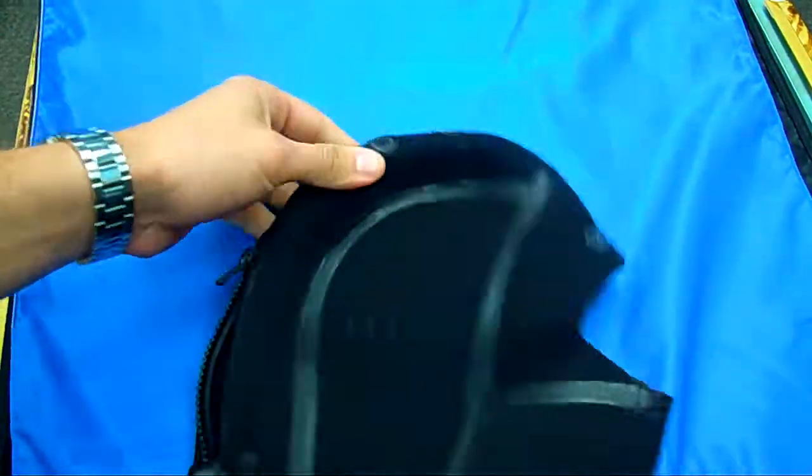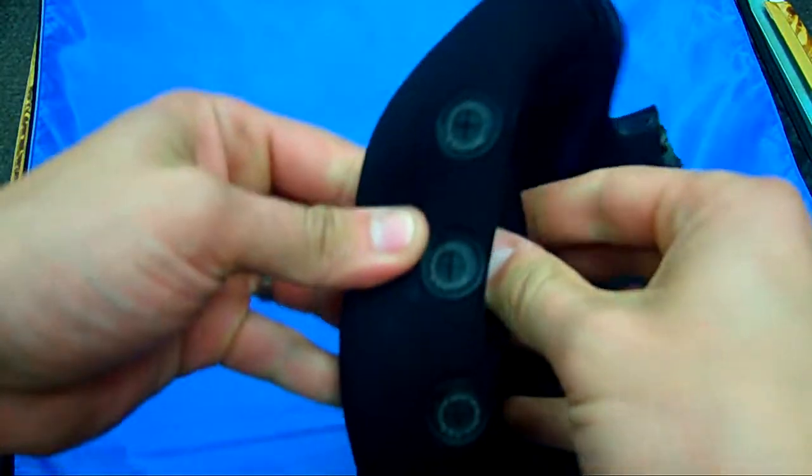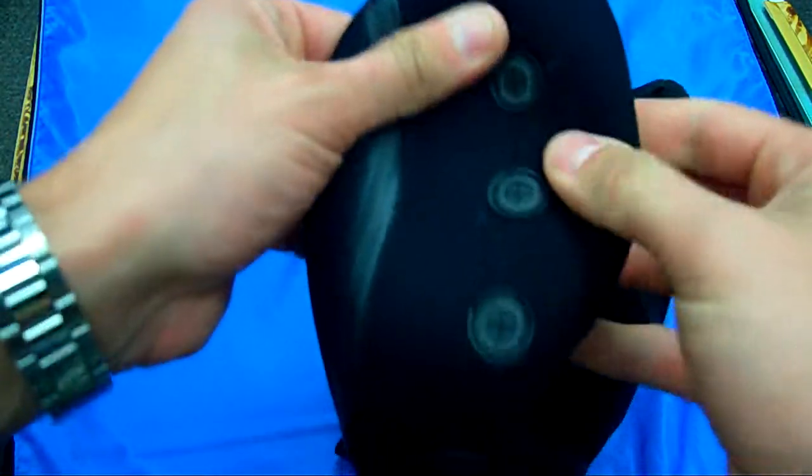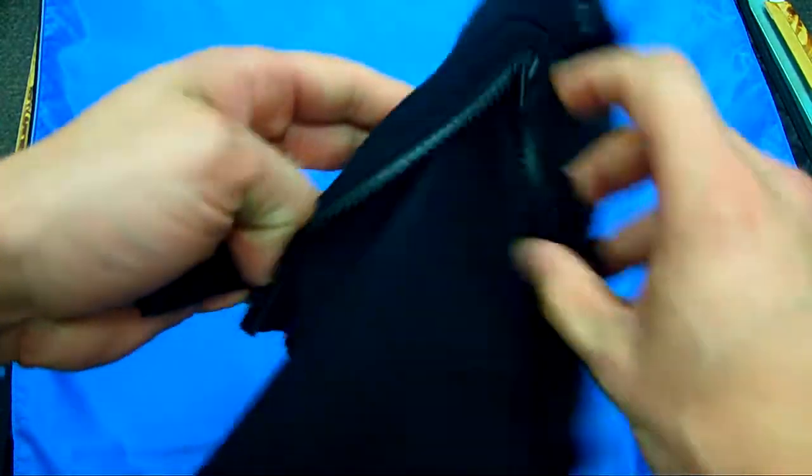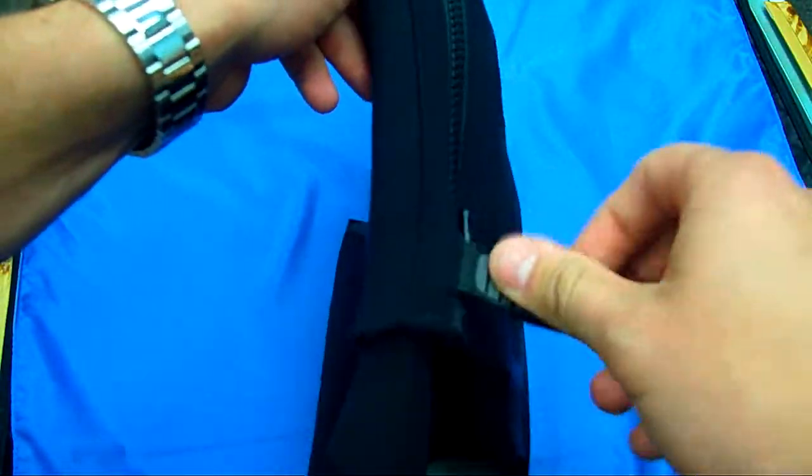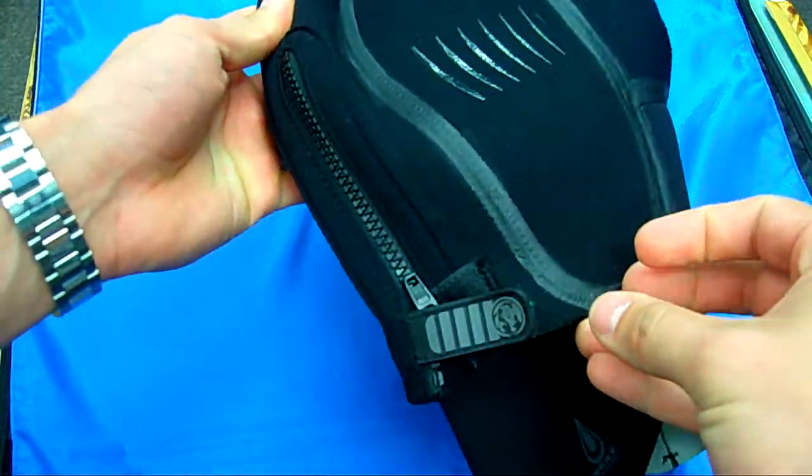So basically what this hood is going to do is any of the water that gets in, your body is going to heat it up. It's going to keep that warm water inside the hood keeping you warmer longer. It also has a zipper in the back of the hood to make it easier to get in and out of with the Velcro closure so that it doesn't pop open on you.